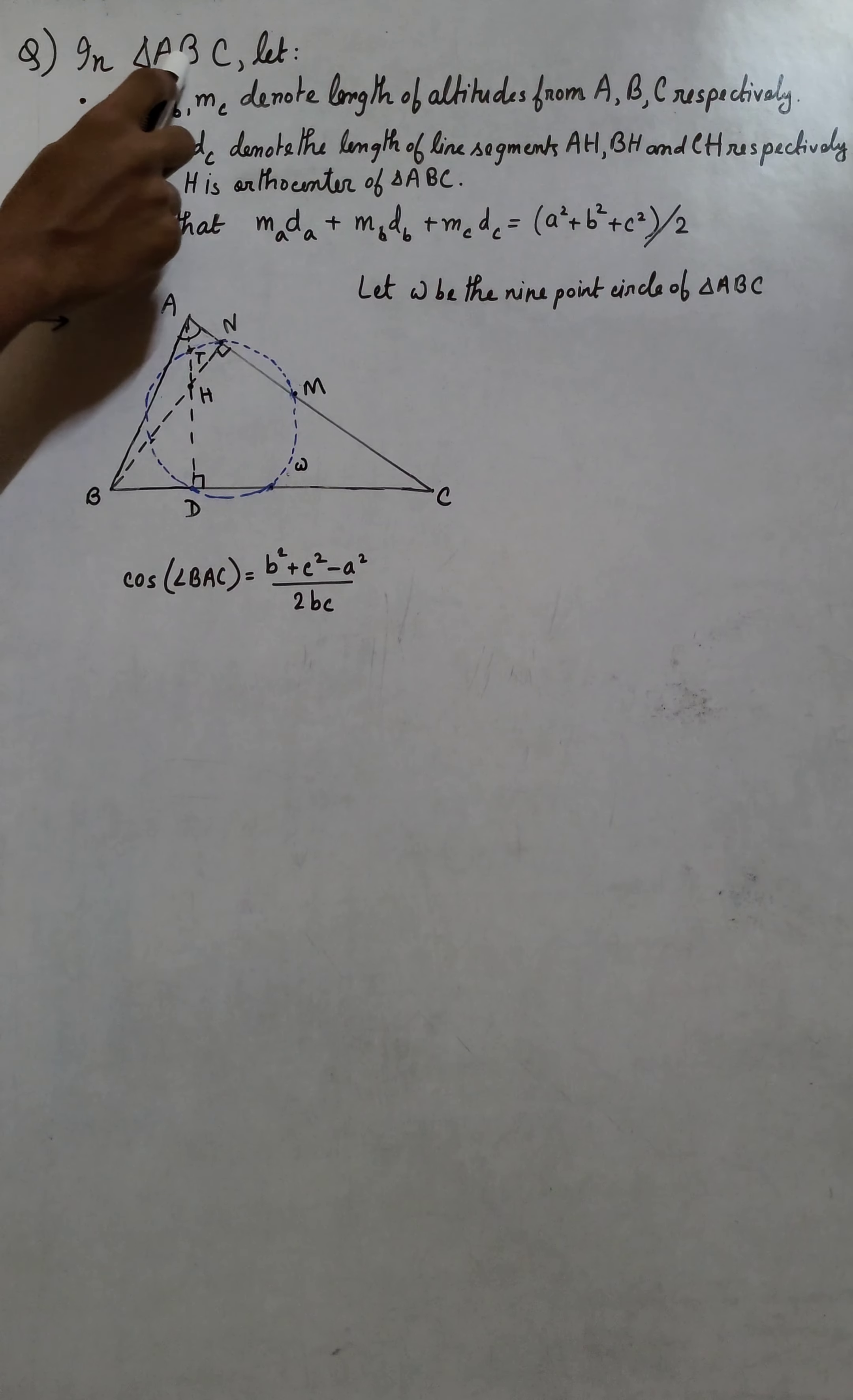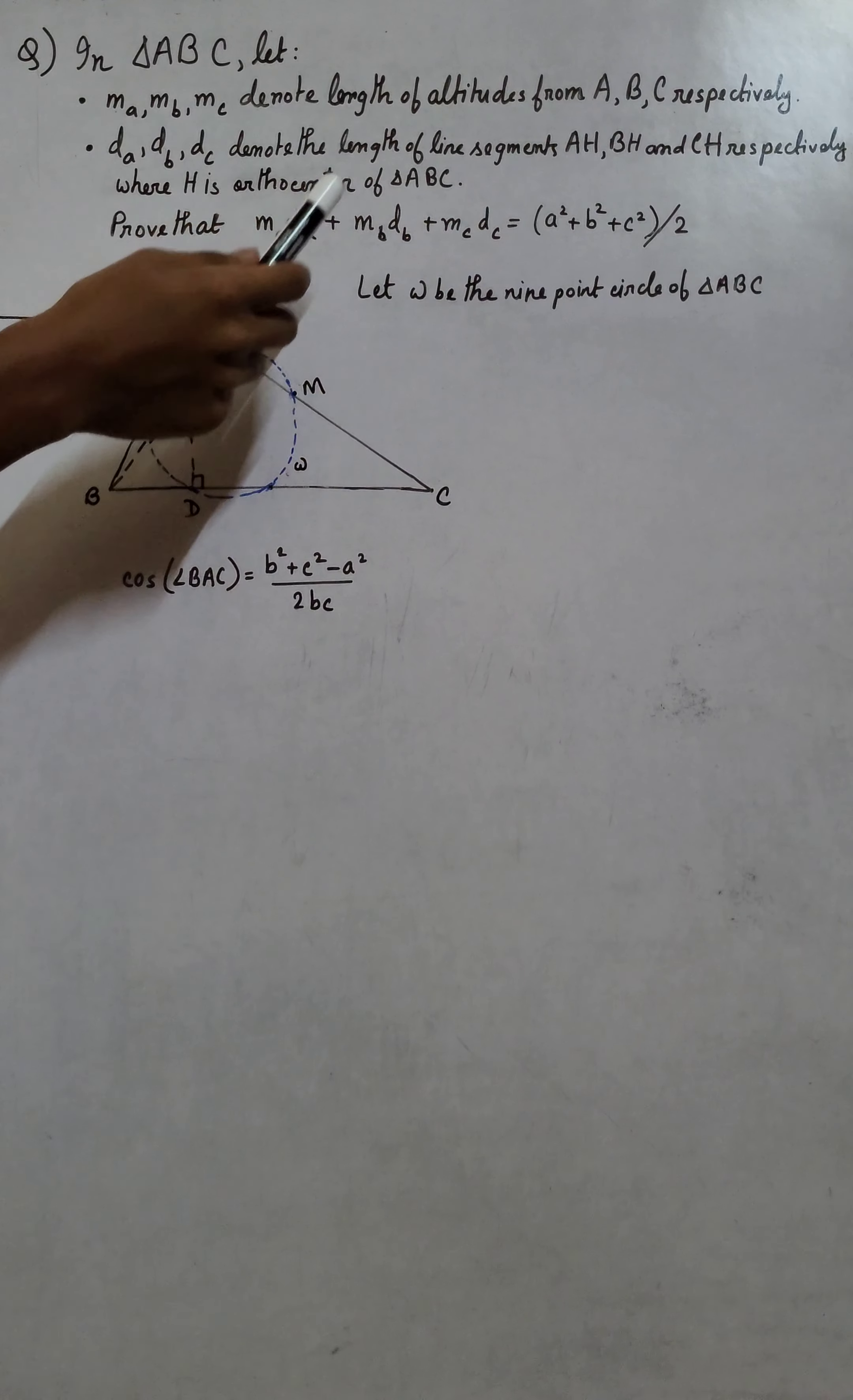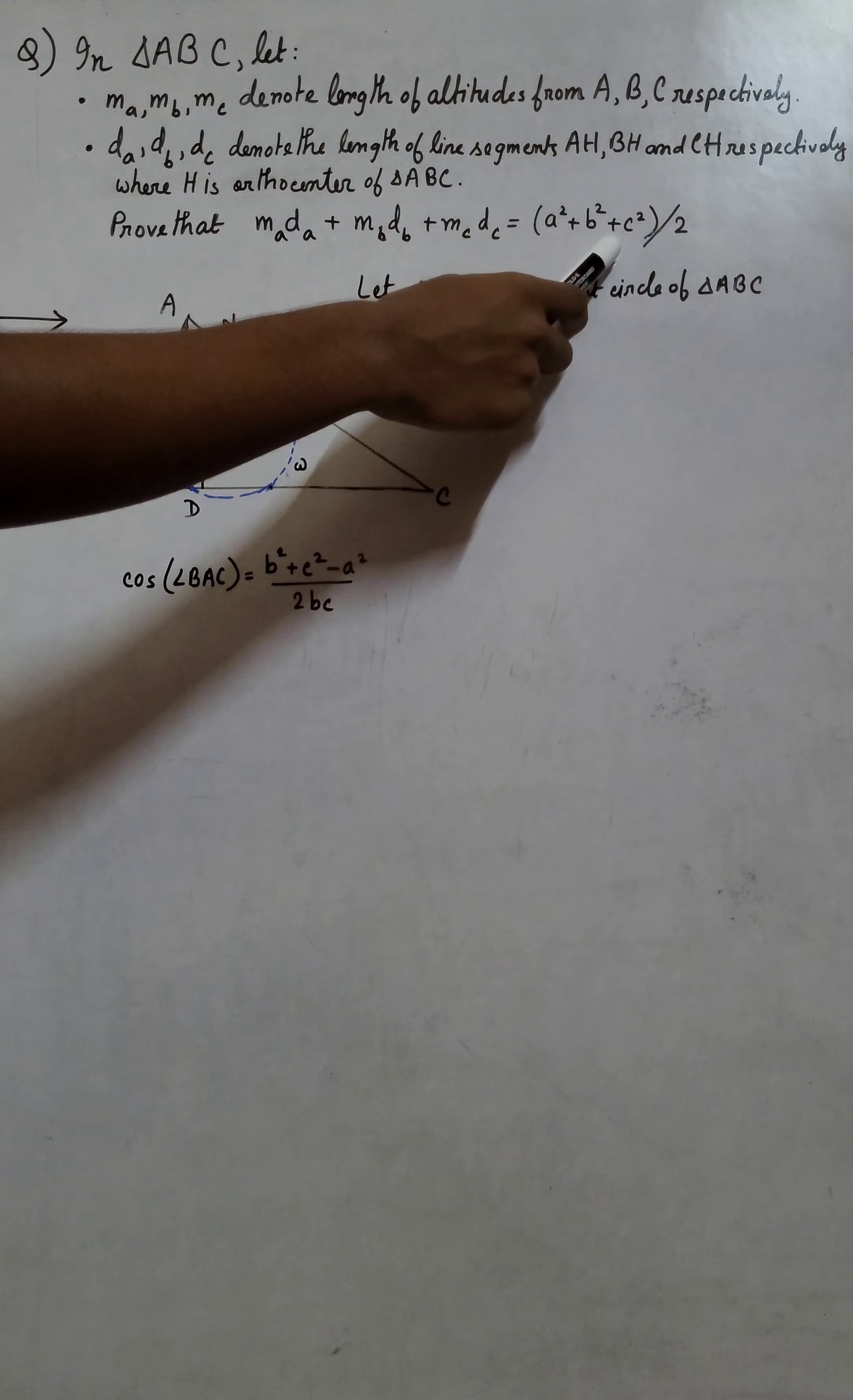In triangle ABC, let MA, MB, and MC denote the length of altitudes from vertices A, B, and C respectively, and let DA, DB, and DC denote the length of line segments AH, BH, and CH respectively, where H is the orthocenter of triangle ABC. We need to prove that MA times DA plus MB times DB plus MC times DC equals (A² + B² + C²)/2.